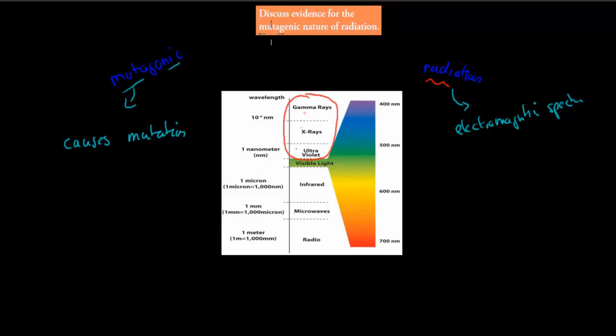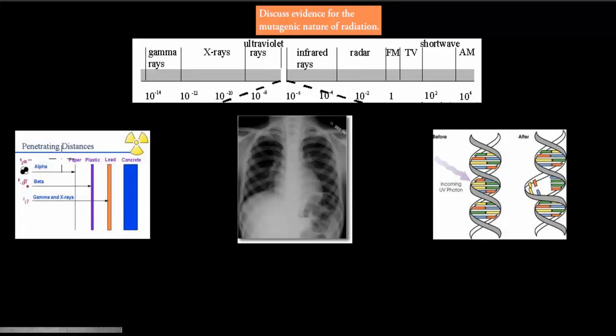Because the actual sub-point itself says discuss evidence for the mutagenic nature of radiation. So we're going to talk about these three different types of examples and the evidence that suggests they cause mutations. I'll go over each individually. First, gamma rays. This has to do usually with nuclear fission.